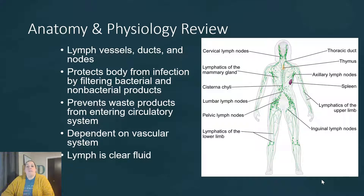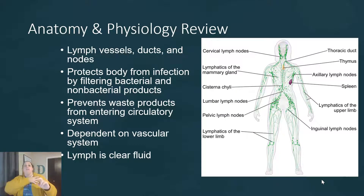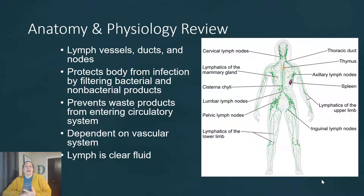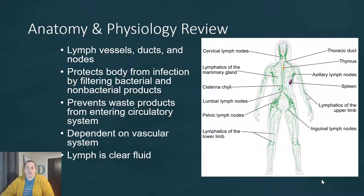Now these lymph nodes are normally concentrated in areas where connections take place in the body. So you see them here in the neck, you see them in the underarm area, the groin, as well as along a lot of the structures where things could potentially gain access, like your lungs and your digestive system. Now the point of these lymphatic structures is to protect the body from infection, and it does this by filtering bacterial and non-bacterial products from its fluid.